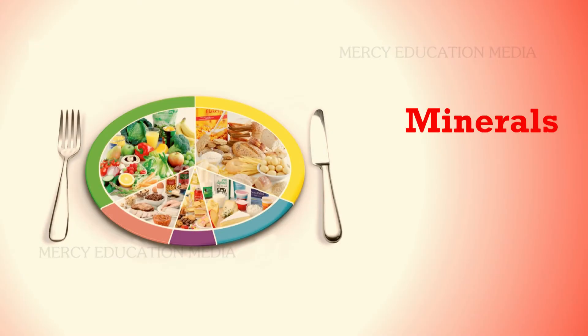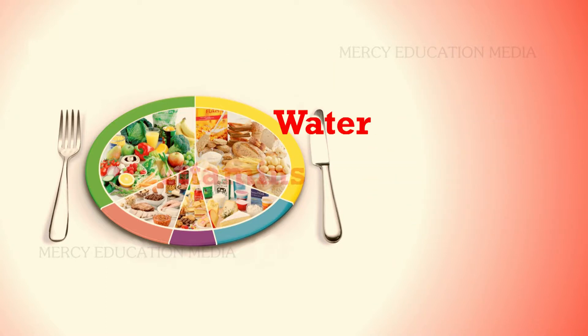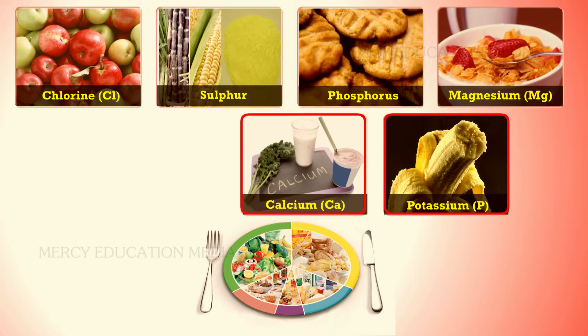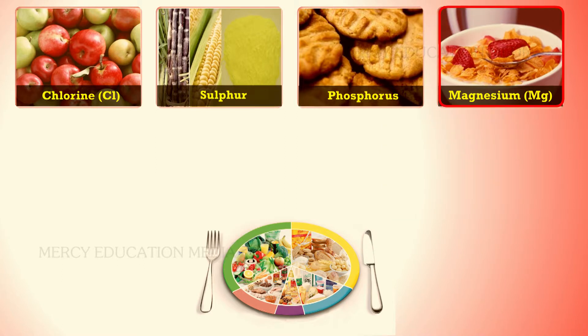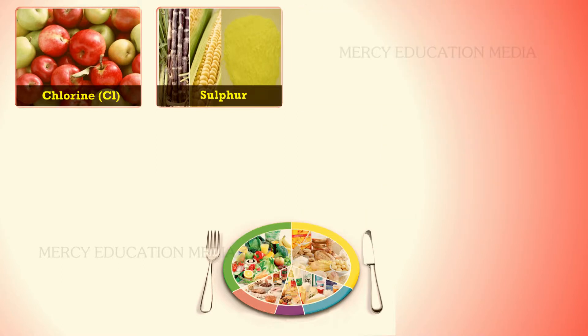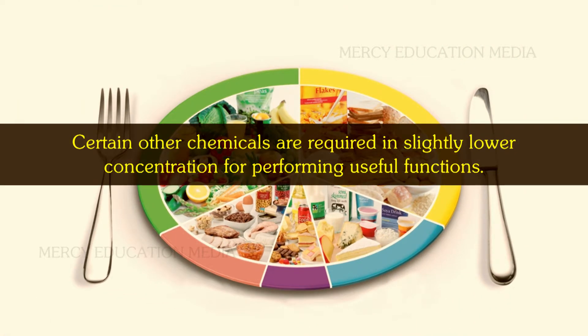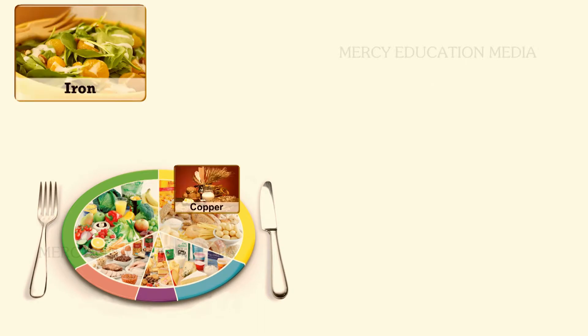Let us learn about minerals. Minerals, vitamins, and water are accessory food factors. They include sodium, calcium, potassium, magnesium, phosphorus, sulfur, and chlorine. Certain other chemicals are required in slightly lower concentrations for performing useful functions; these include iron and copper.